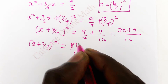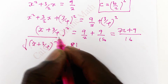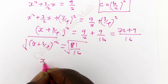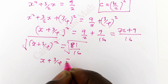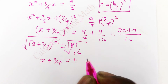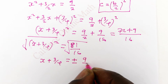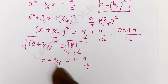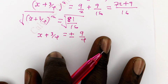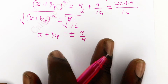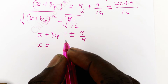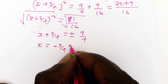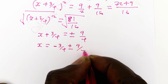The next step is to get the square root of both sides, so that you have x plus 3 over 4 is equal to plus or minus the square root of this, which will be 9 over 4. We can rearrange this so that the two solutions for our equation are clear.